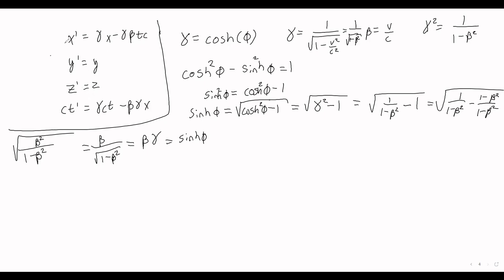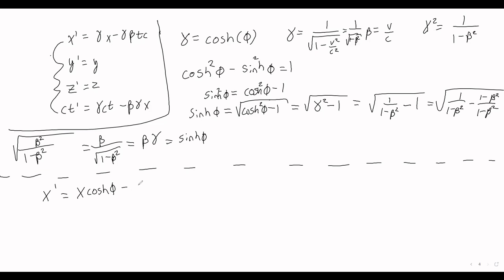We rewrite our transformations in terms of hyperbolic sine and cosine: x-prime equals x cosh phi minus ct sinh phi. y and z stay the same. And ct-prime equals ct cosh phi minus x sinh phi.